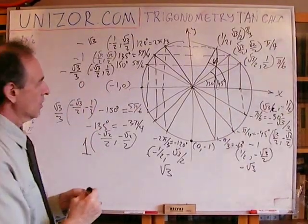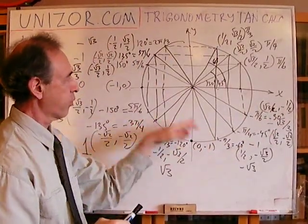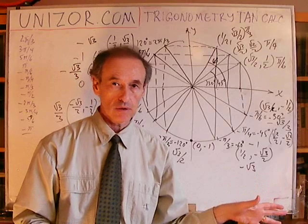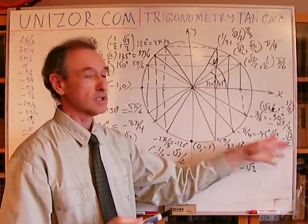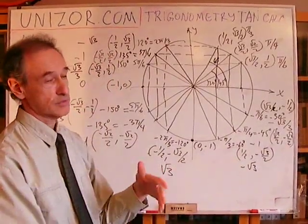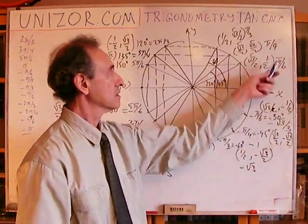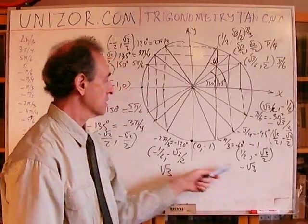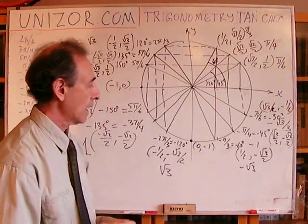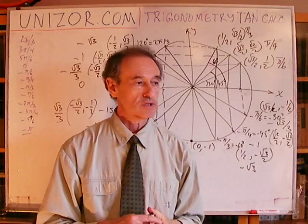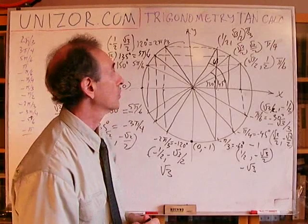So these are the values of coordinates of the points representing basic angles. Based on the coordinates and the definition of tangent — ordinate divided by abscissa, or sine divided by cosine — I calculated the values of the tangent in each of these basic cases. I will continue doing exactly the same for the other functions; the next one will be cotangent. That's it for today, that's it for tangent. Thank you very much.